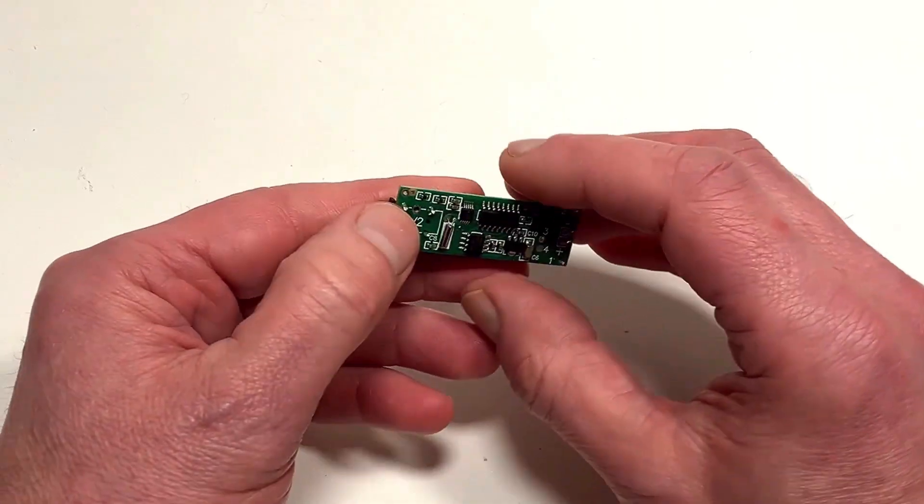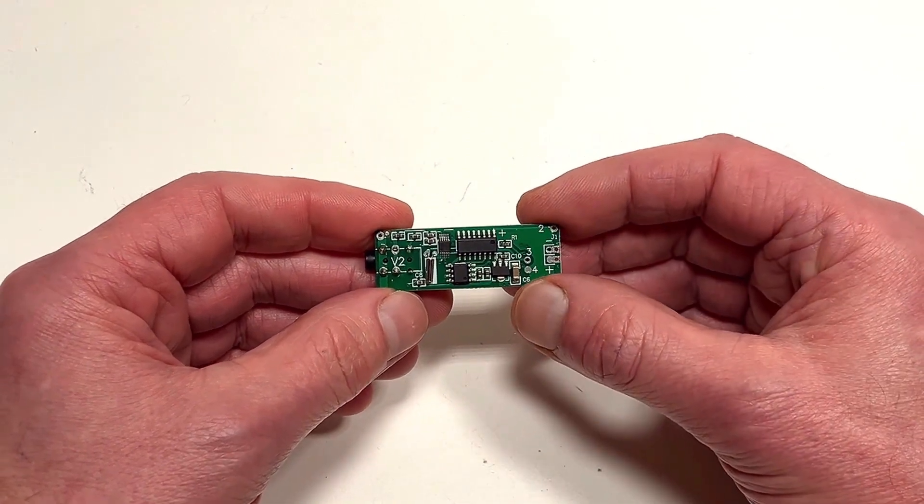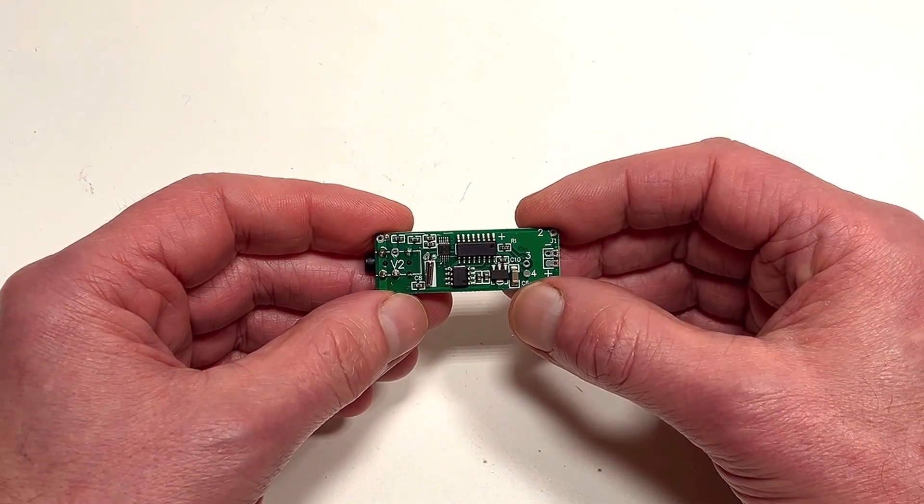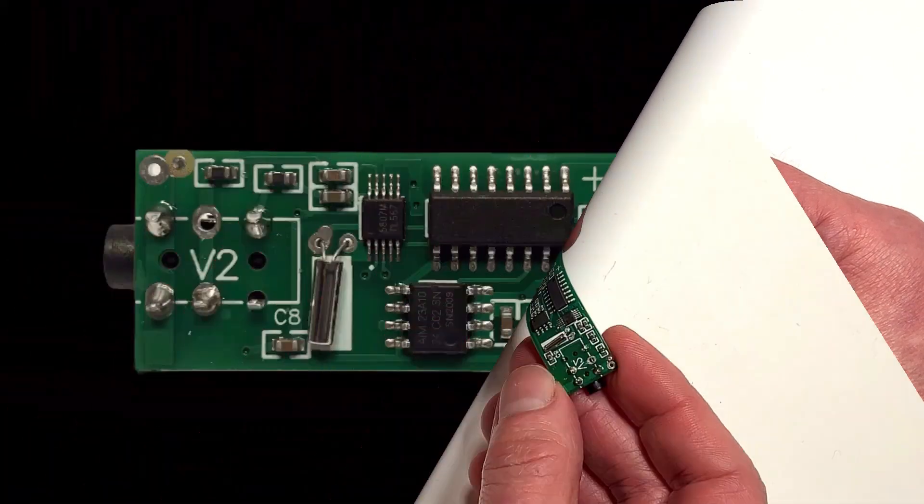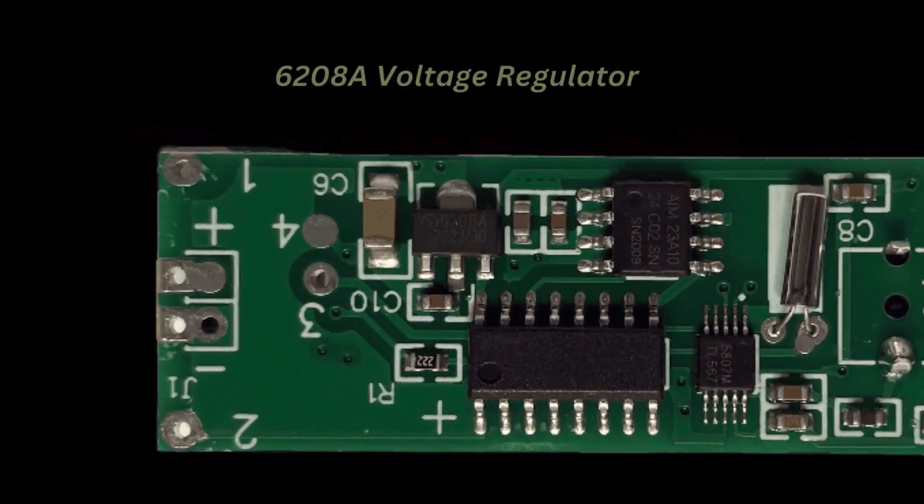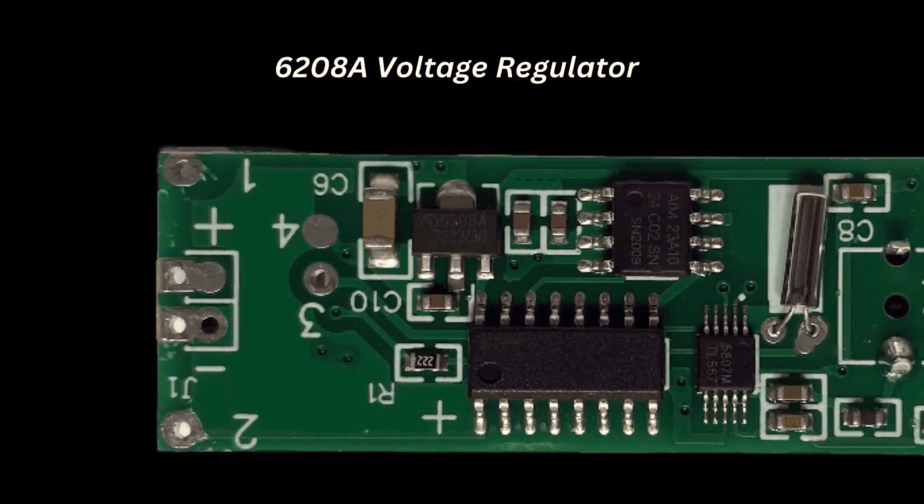Now looking at the reverse we've got 4 ICs. What I'm going to do is just take a photograph of this. And I'm just going to briefly run through those 4 ICs for you. So starting with this. This is the 62088. It's a voltage regulator.